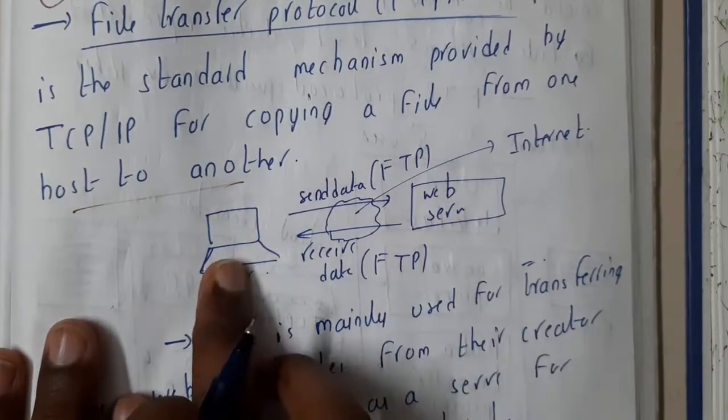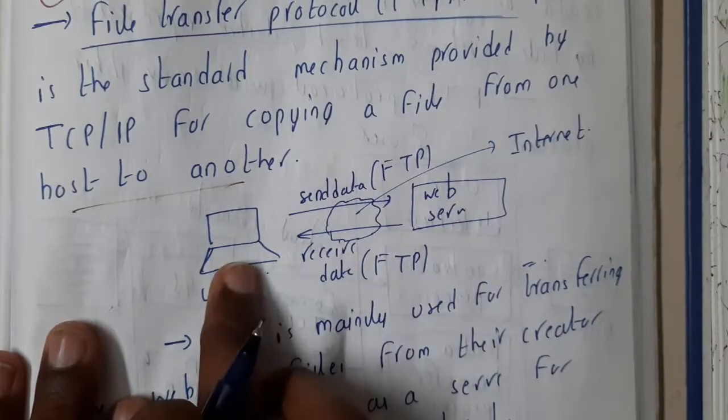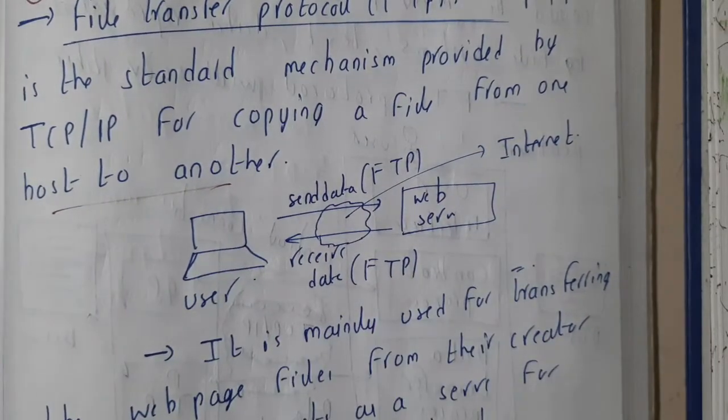So basically here is a user and here is a web server. The user is interacting with the web server and downloading something. He is sending a request of FTP and the server is accepting and sending the data in return. In between we will be having internet.